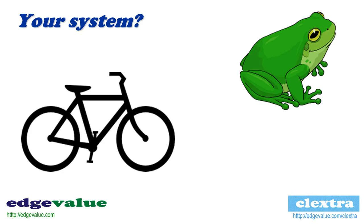As a systems architect, you would face essentially two kinds of systems. In fact, most systems at any level, any industry, are essentially of two kinds — what we can term as bicycle-like systems and frog-like systems. The key difference between the two is that one is biological and the other is mechanical.